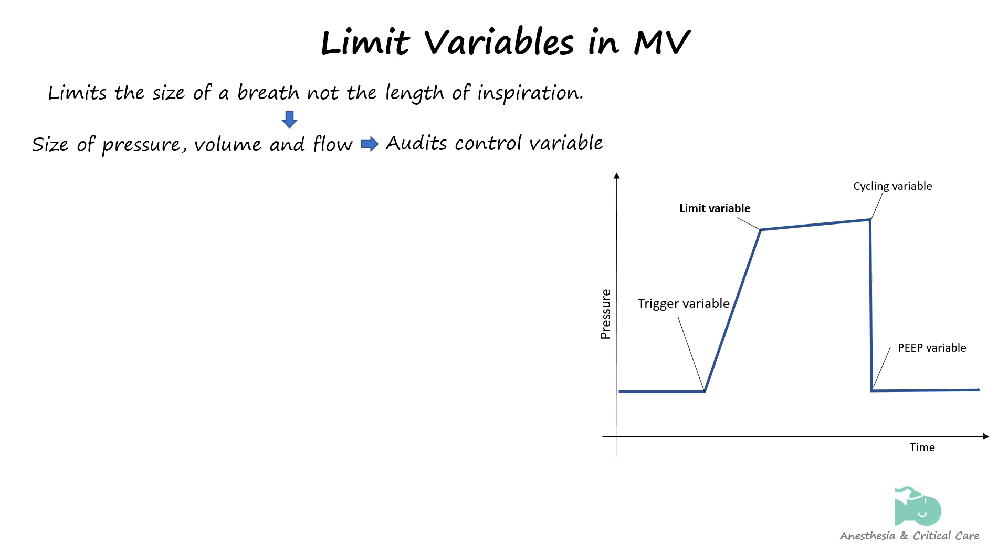When the volume limit is met, the inspiratory flow ceases. Unlike the control variable or the cycling variable, multiple simultaneous limits can apply to the inspiratory phase.